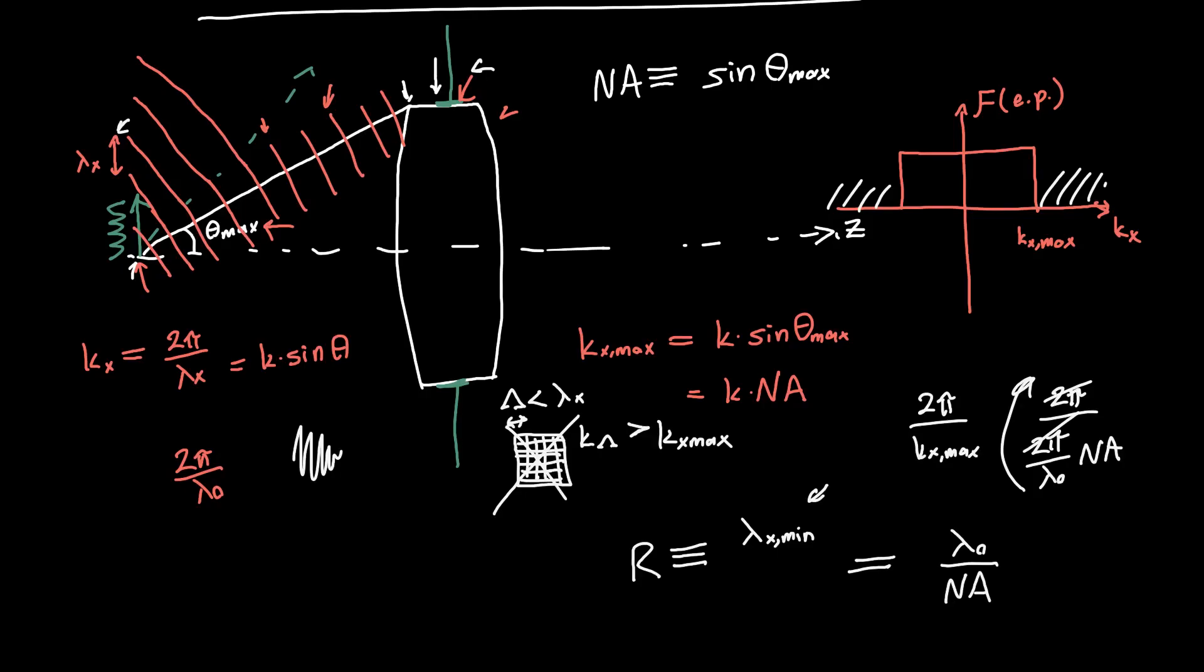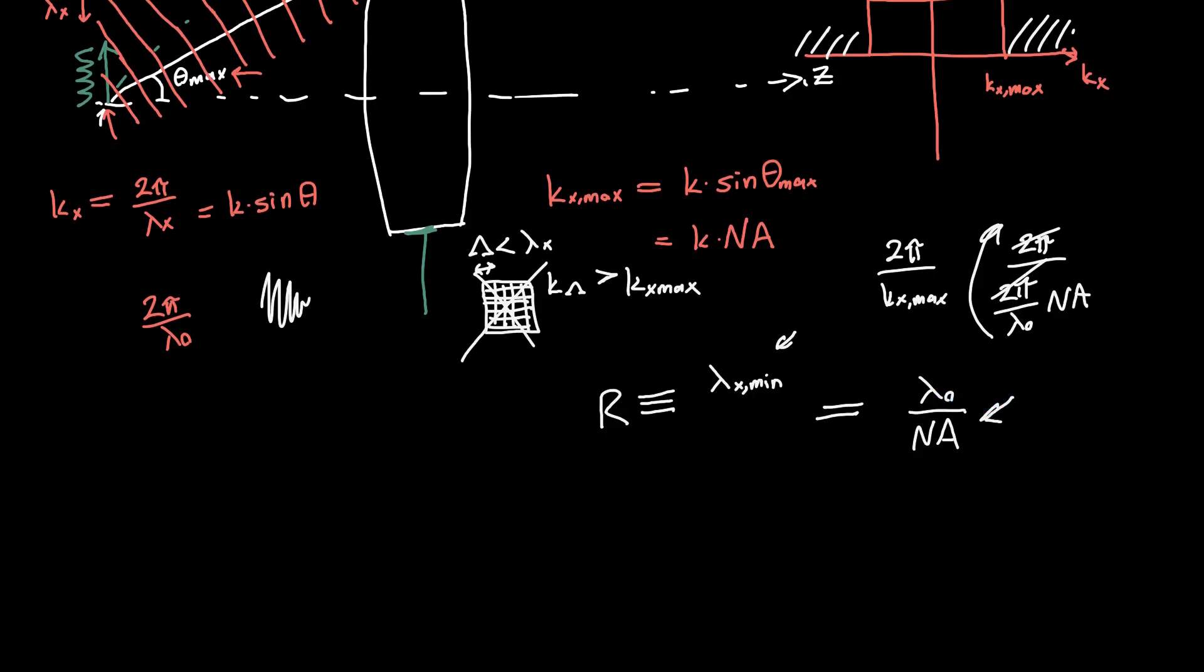And this looks an awful lot like the equation you'll get if you just analyze things in terms of Airy patterns. So the resolution that you'll get if you analyze things in terms of Airy patterns, the separation of the first null of your Airy patterns, you'll get that the resolution is just 1.22, or let's say 0.61 times λ₀ over NA.